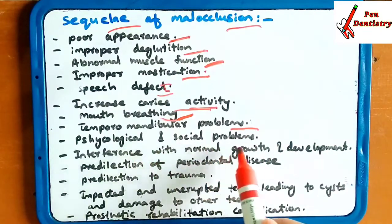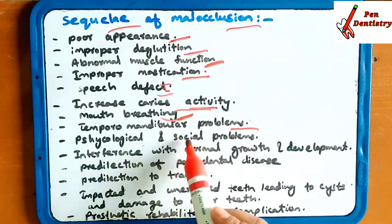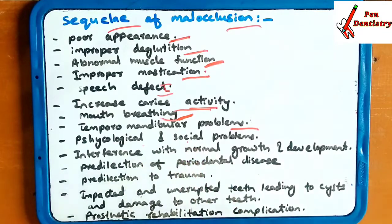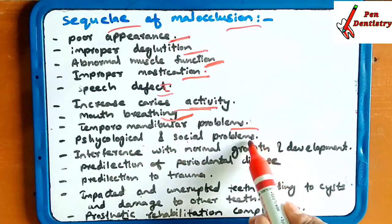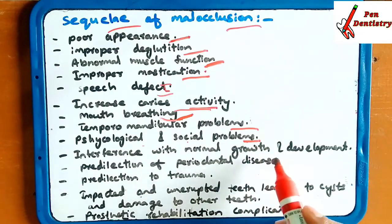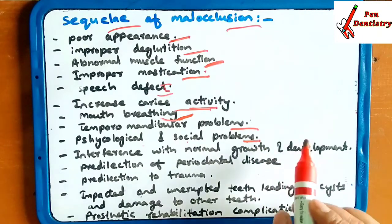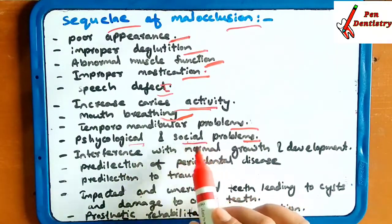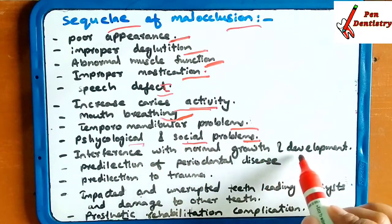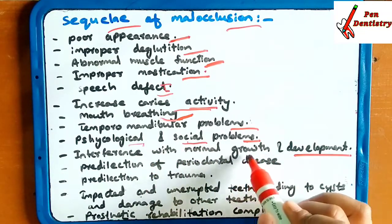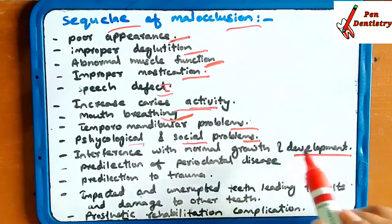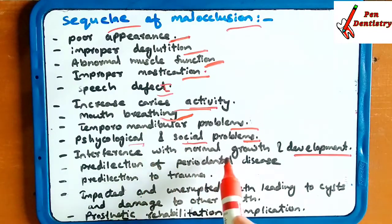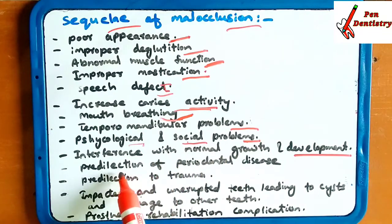Psychological and social problems. Interference with the normal growth and development — during the time of growth and development, malocclusion will interfere with the growth pattern.